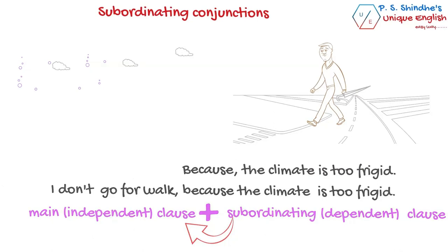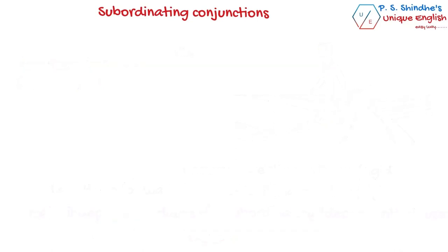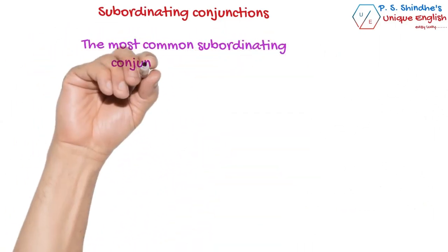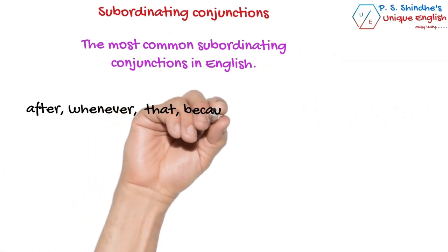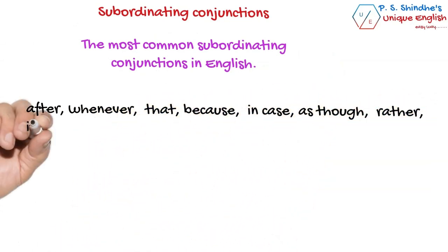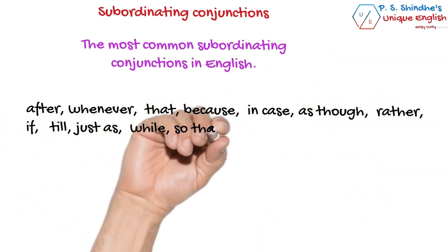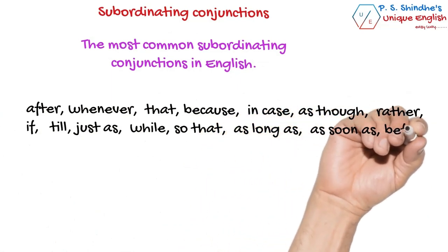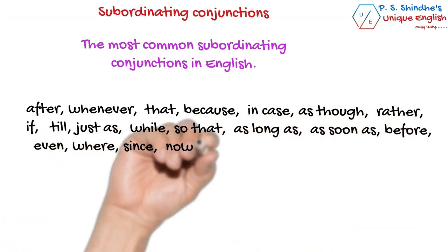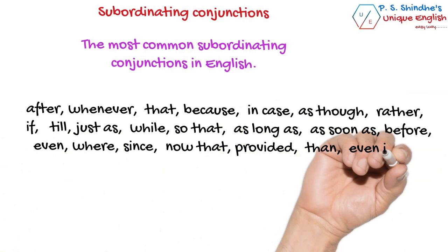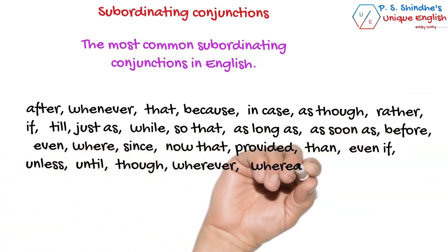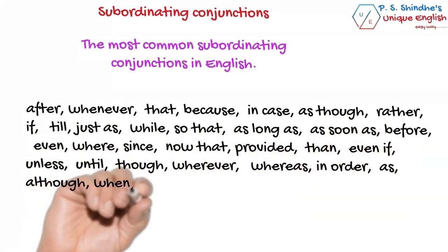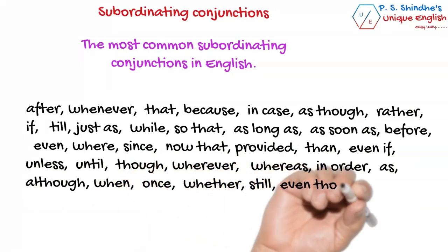There are many words and phrases that function as subordinating conjunctions. The most common subordinating conjunctions in English include: after, whenever, that, because, in case, as though, rather, if, till, just as, while, so that, as long as, as soon as, before, even, where, since, now that, provided, then, even if, unless, until, though, wherever, whereas, in order, as, although, when, once, whether, still, even though, etc.